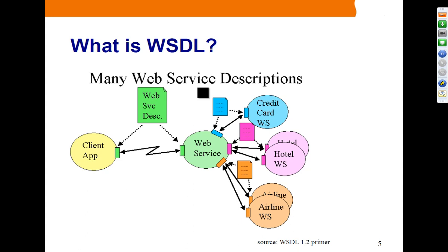A WSDL document must be provided to the client for any web service. If this is a web service, the provider has to provide the Web Service Description Language document to the client. That is the only contract needed between client and server, and it should specify what services are available, what makes up those services, and how to invoke them.